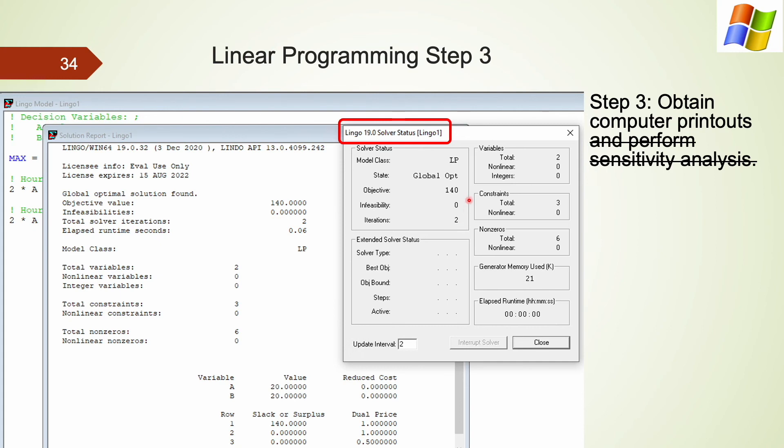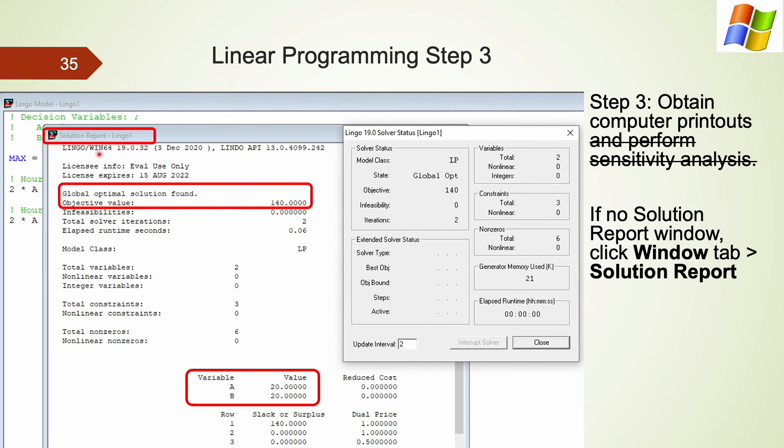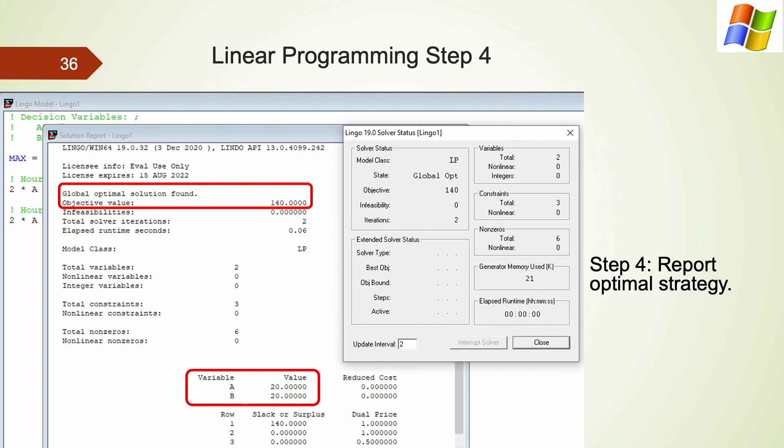Another window is called Solution Report. If this one does not show up, please click on Window tab on the very top and choose Solution Report. This window includes the optimal solution and the objective function value along with other useful information for our decision-making process. First of all, the optimal solutions for A and B are 20 and 20 respectively. When the decision variables take the optimal solutions that are 20 for A and 20 for B, the value of optimal objective function is 140 as shown here. Therefore, the maximum weekly profit for this company is 140 dollars when it produces 20 units of A and 20 units of B.